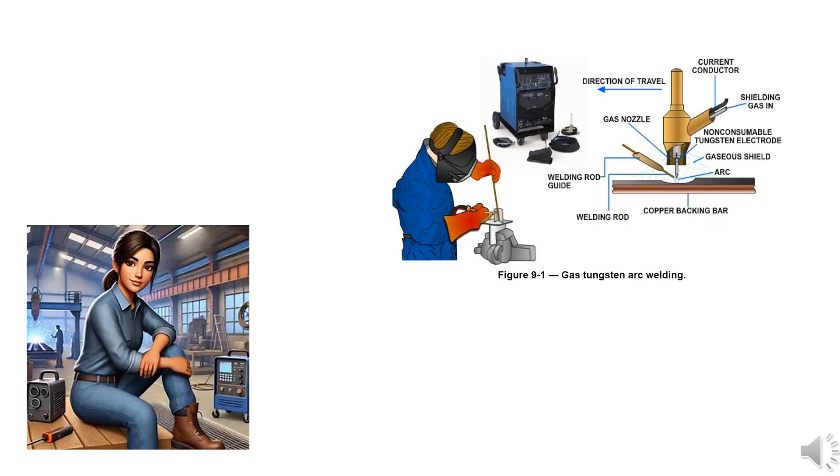Overview: The gas tungsten arc welding GTAW process uses a non-consumable tungsten electrode to produce the weld. A shielding gas, typically an inert gas like argon, protects the weld area from atmospheric contamination. The process may or may not employ a filler metal.